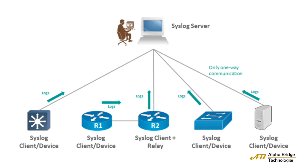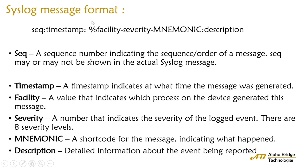There is a special format for the syslog message. First, there will be a sequence number, which indicates the order or sequence of the message. This sequence number is optional — it may or may not be shown in the actual syslog message. After that, there is a timestamp, which indicates at what time the message was generated.